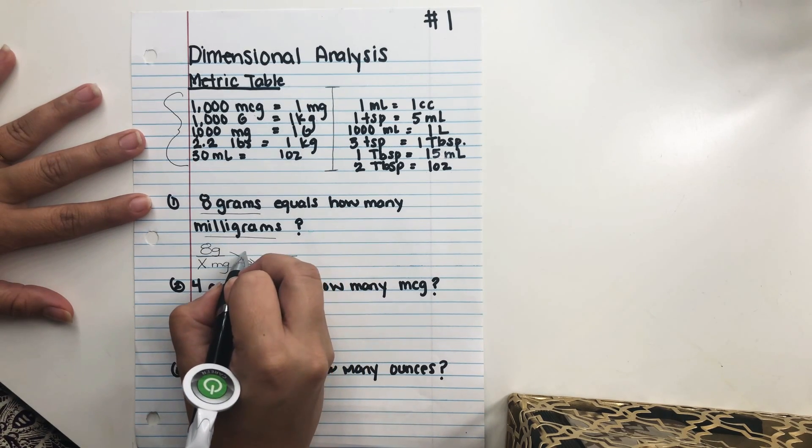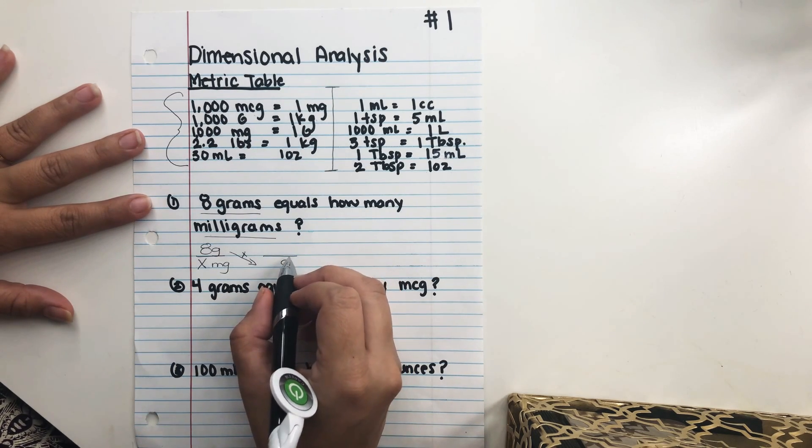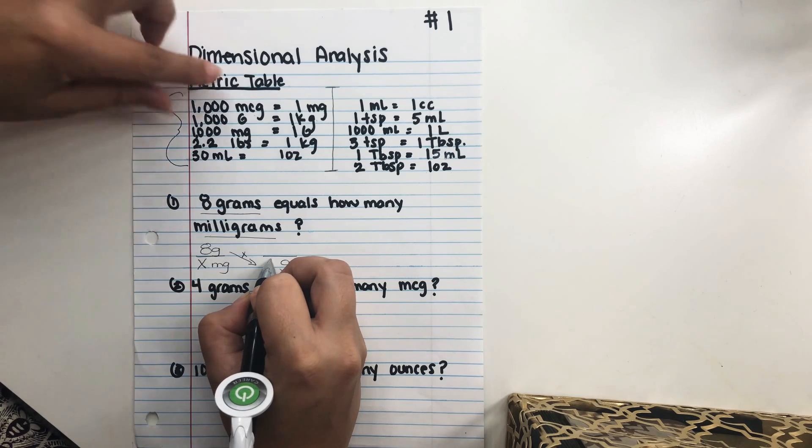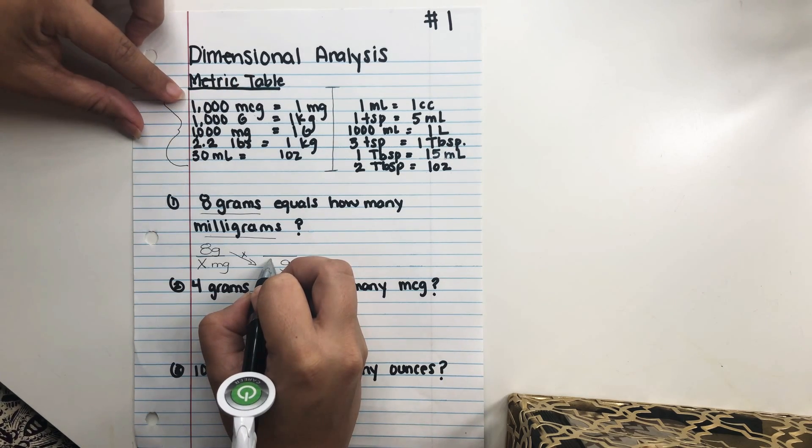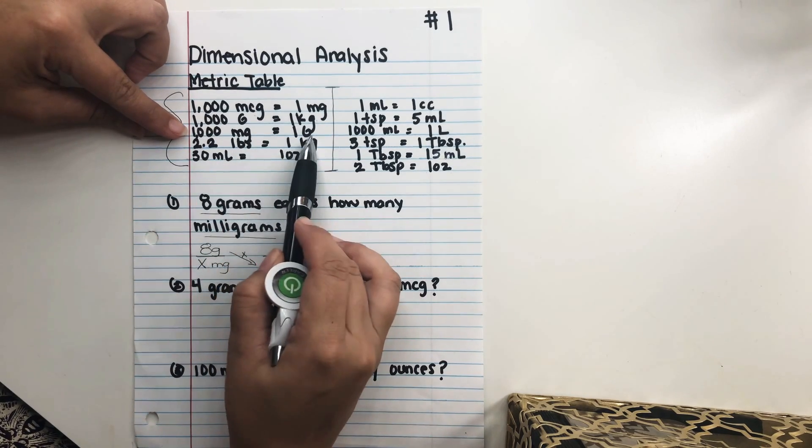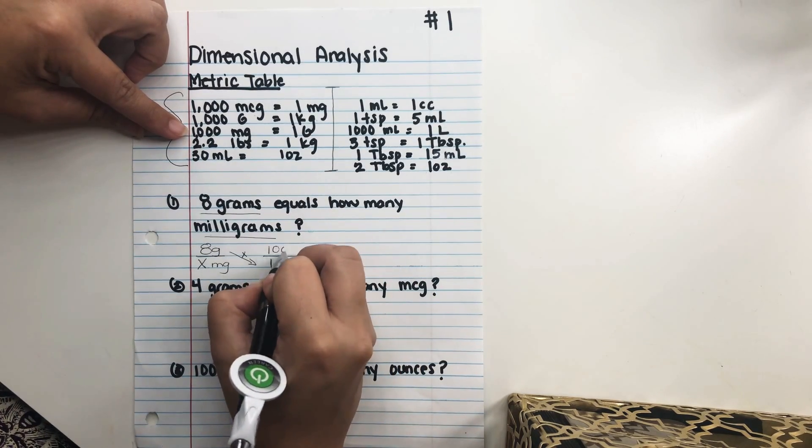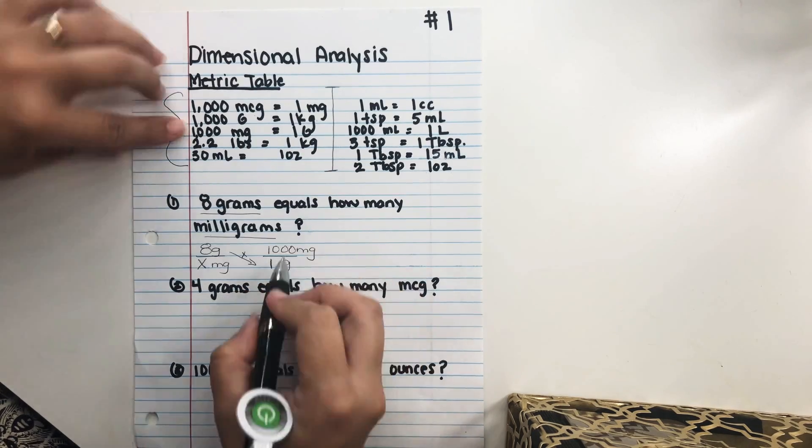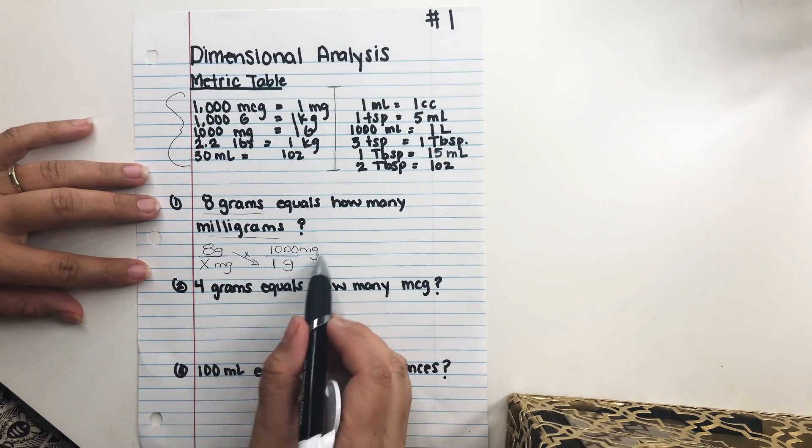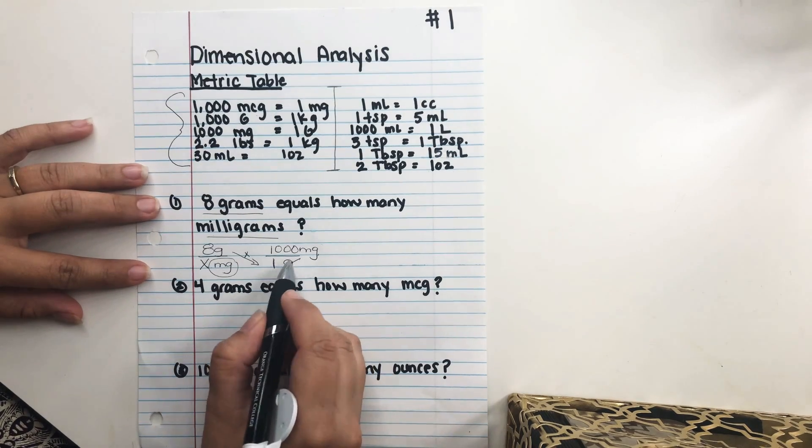So we're gonna go ahead and do that. And this is all multiplication straight across. And we're gonna go ahead and see what does 1 gram equal in milligrams? So we're gonna go to our metric table and we're gonna find 1 gram. Well we know 1,000 milligrams equals 1 gram. So we're gonna go ahead and put 1 gram equals 1,000 milligrams. And our goal is to get rid of some of our units. So we know that we need milligrams. So we're gonna keep that and we're gonna go ahead and get rid of our grams.